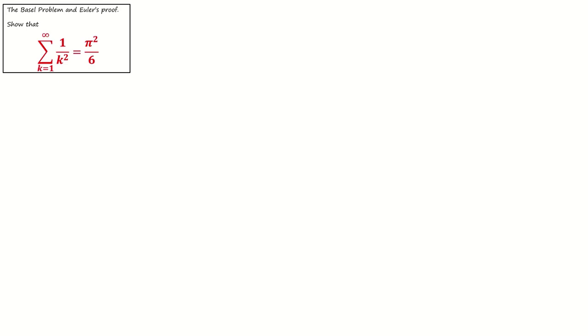Let me now present the method by Euler. First, we know that the Maclaurin series of sin x is x minus x to the power 3 over 3 factorial plus x to the power 5 over 5 factorial minus x to the power 7 over 7 factorial, and so on.